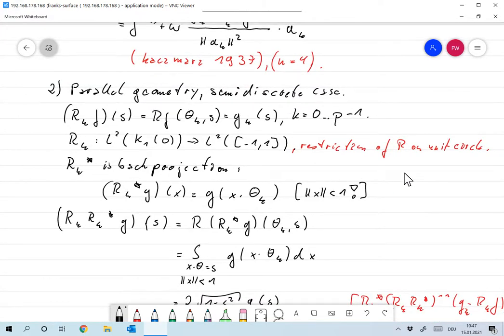Okay, alternatively, let's look at the parallel geometry for the Radon transform and the semi-discrete case, which are already motivated. So I defined the operator Rk F, by Rk F of S is Rf of theta K and S, and that should be equal to Gk of S for K from 0 to P minus 1. So we assume that the Radon transform has been measured for directions theta 0 to theta P minus 1, and the measurements are Gk. So we wish to solve this equation.